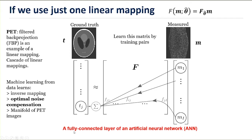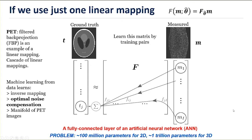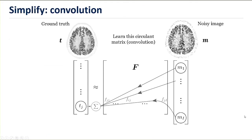The big problem is we would need maybe 100 million parameters to populate that matrix for a 2D reconstruction, and worse still, for 3D reconstruction this would need maybe a trillion parameters. So let's move on to see how we can simplify that — and a well-known example would be convolution.